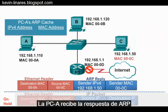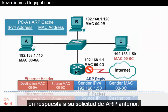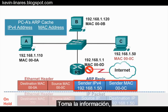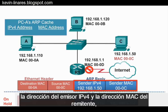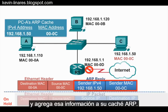PCA receives the ARP reply in response to its previous ARP request. It takes the information — the sender IPv4 address and the sender MAC address — and adds that information to its ARP cache.